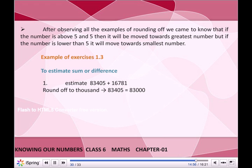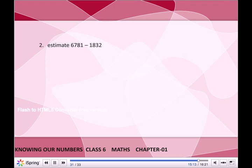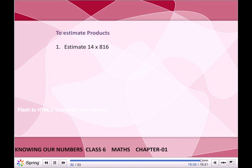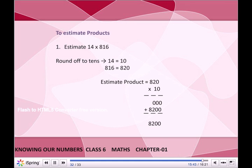To estimate the sum or difference — Estimate 83,405 + 16,781: Round off to thousands: 83,405 → 83,000; 16,781 → 17,000. Estimated sum = 83,000 + 17,000 = 1,00,000. Estimate 7,681 − 1,832: Round off to thousands: 7,681 → 7,000; 1,832 → 2,000. Estimated difference = 7,000 − 2,000 = 5,000. To estimate products: Estimate 14 × 816 — round off to tens: 14 → 10; 816 → 820. Estimated product = 820 × 10 = 8,200.